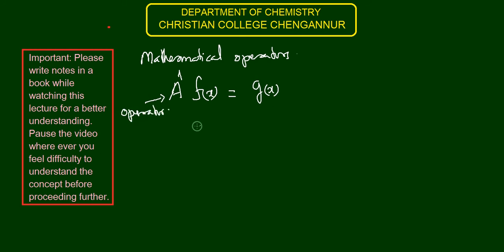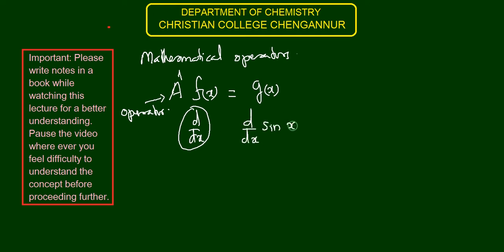For example, consider d/dx — this is an operator. When it stands alone, it does not have any meaning. But when this operator is written along with some function, for example d/dx of sin(x), then it gets meaning. This operator operates over the function and gives another function, cos(x). So d/dx is an operator — it is a differential operator.